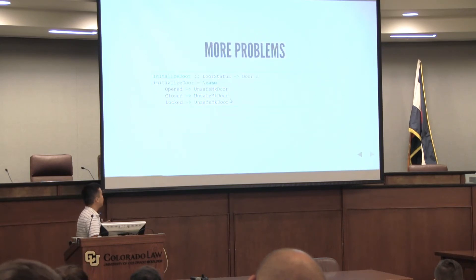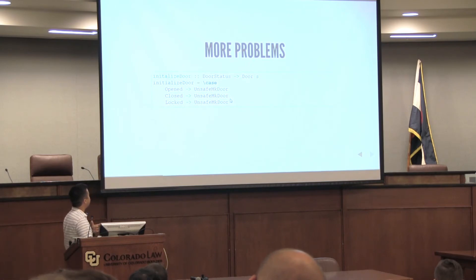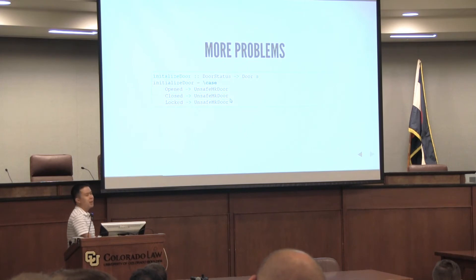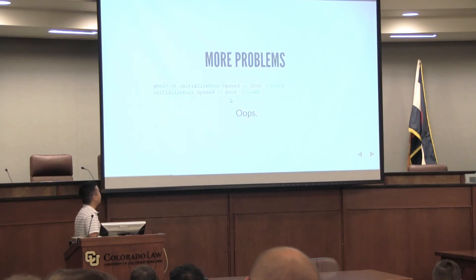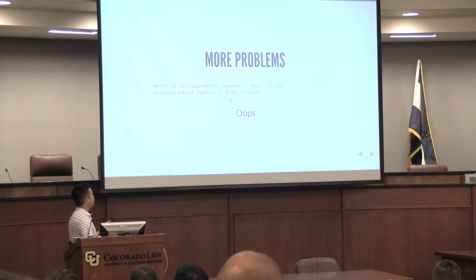Other problems: let's say we want to make something that makes a new door with a given status. This has problems, of course. This is a naive way to do it. If you get Open, we want to make an open door; closed door; locked door. But this doesn't work. Why does this not work? The user can give whatever S they want. Let's say: does this work? No — this has Door Open, and we want the type Door Closed, and we get a Door Closed even though we used Open. It doesn't work out.